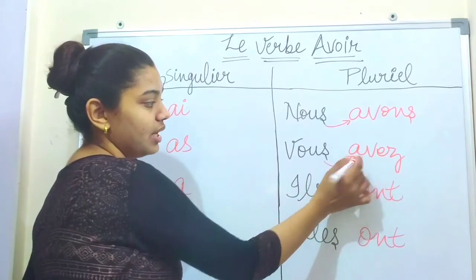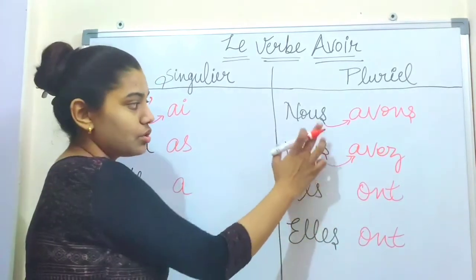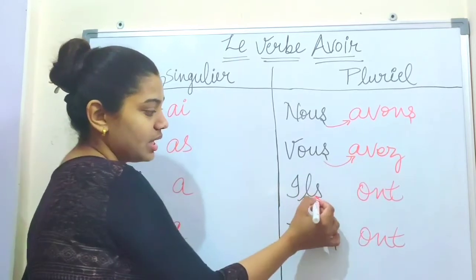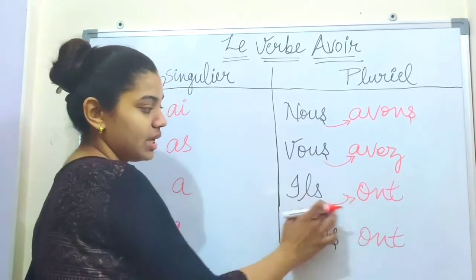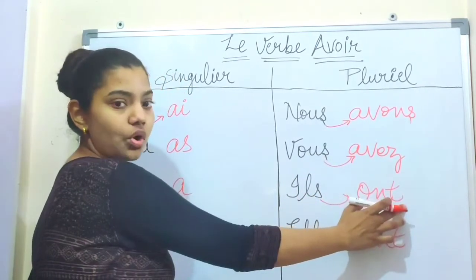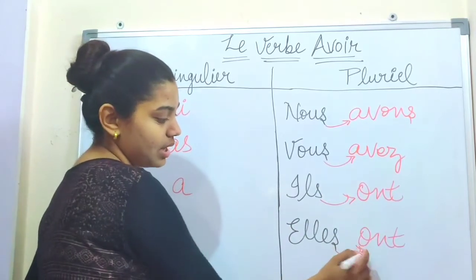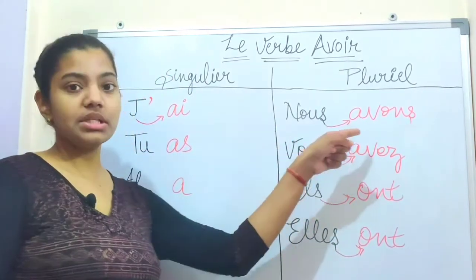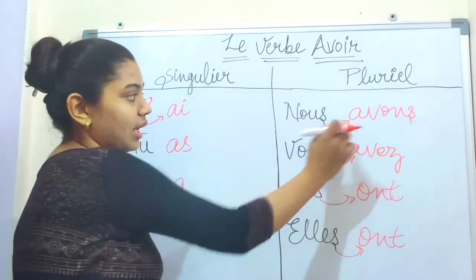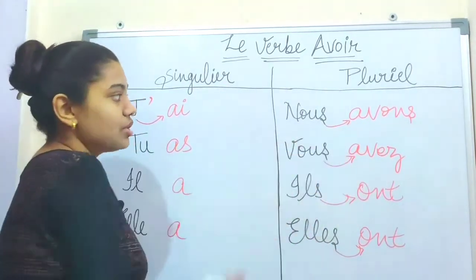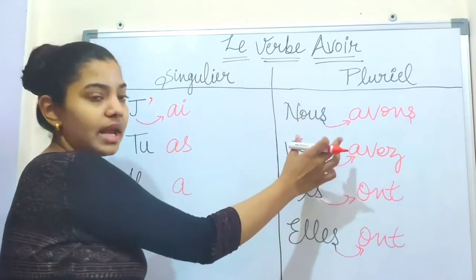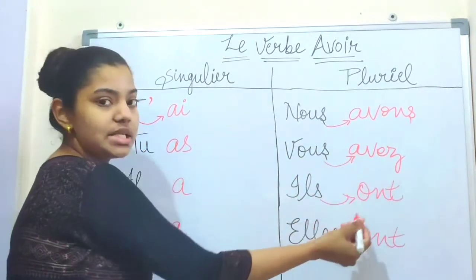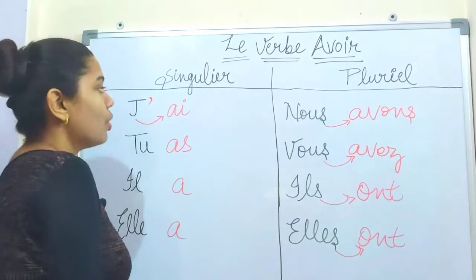Vous avez. Ils ont, and elles ont. In these plural forms, we are merging the sound — the 's' links with 'a' — because of liaison. That's why we pronounce: nous avons, vous avez, ils ont, elles ont.